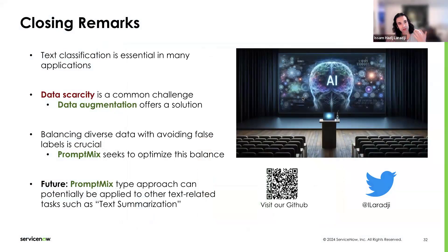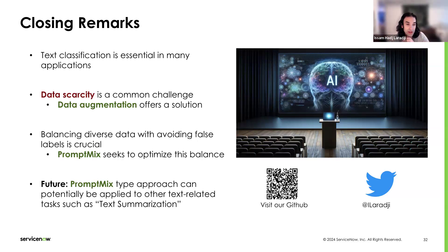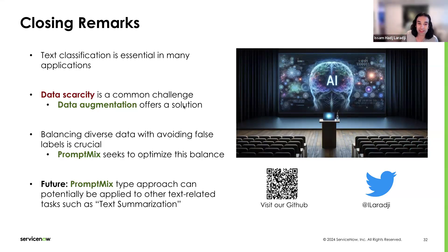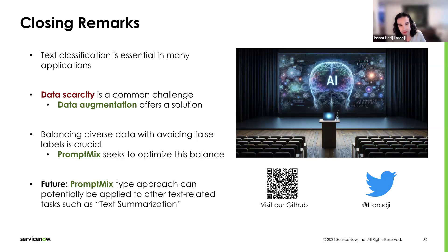To close, let me highlight the key takeaways: text classification is important in many applications; a common challenge in specialized domains is data scarcity, but data augmentation offers a very good solution; when doing data augmentation, be careful to balance diverse data against false labels; and with PromptMix, we can optimize that balance. Future work includes applying the PromptMix-type approach to other text-related tasks like text summarization. The codebase for PromptMix is available on GitHub — scan the QR code — and if you're interested in AI-related materials or news, you can follow on Twitter. Thank you very much.